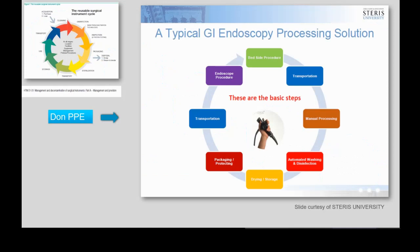A typical GI endoscopy processing solution involves using the endoscope in a GI unit, operating room, or ICU setting. After the procedure, we proceed to bedside cleaning. The scope is then transported to a separate area with a manual reprocessing point, then ideally into an automated washer disinfector or endoscope reprocessor. It is then dried and stored, and a clean scope is transported and used again on a patient.